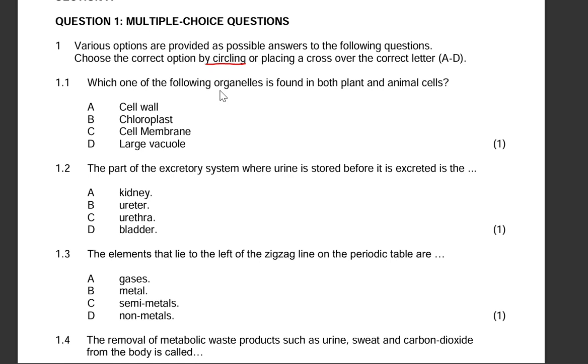The first question: 1.1, which one of the following organelles is found in both plant and animal cells? Is it the cell wall? Definitely not the cell wall, definitely not the chloroplast, definitely not a large vacuole. Cell wall we find it in plant cells only. Same with chloroplast, we find in plant cells only. Same with a large vacuole, we find it in plant cells only. We do find vacuoles in animal cells, however the vacuoles are small. The correct answer here is C, the cell membrane is the only correct option.